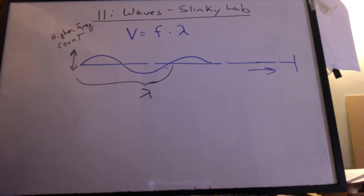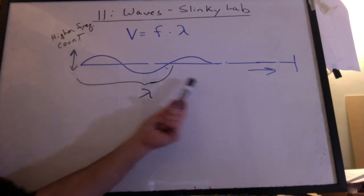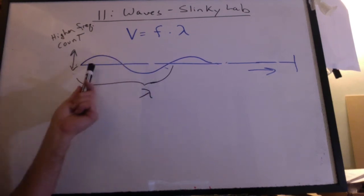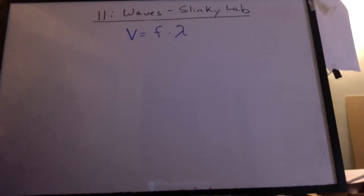What should be easy is a qualitative analysis. If you just make your hand go back and forth quicker, increasing your frequency, you should be able to see that the wavelength has gotten shorter. And that velocity hasn't changed because you haven't changed the tension.